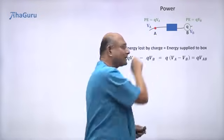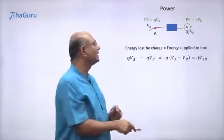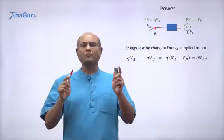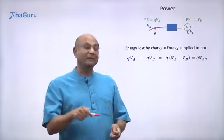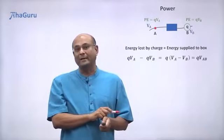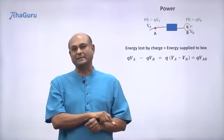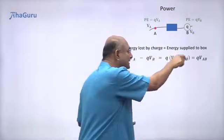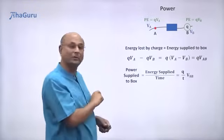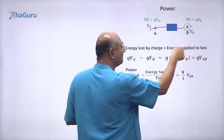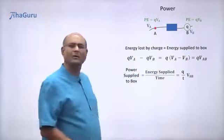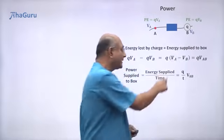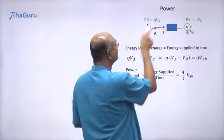So how much energy has the box got? It got Q times VAB. Now many times we are interested in power. Power is the amount of energy supplied divided by time — it is the rate at which energy is supplied. So power supplied to the box is energy supplied divided by time, which is Q·VAB divided by T, or (Q/T) times VAB. Q/T is the amount of charge flowing per second — Q by T is the current.